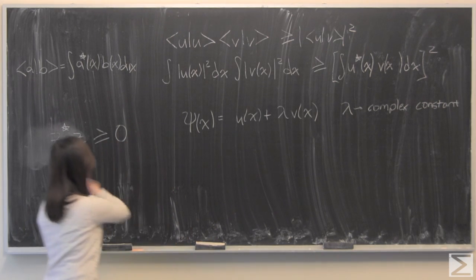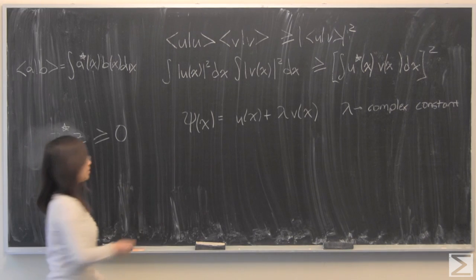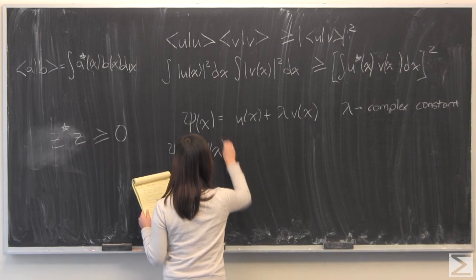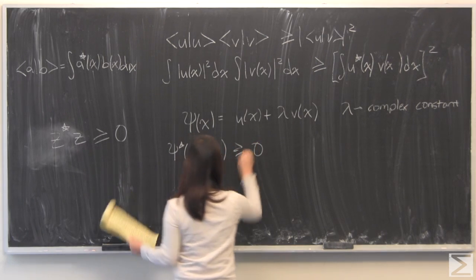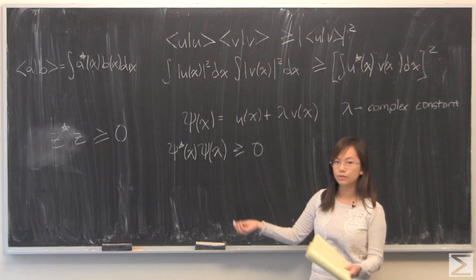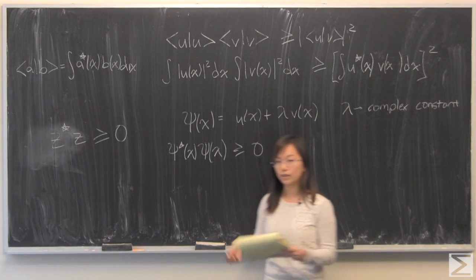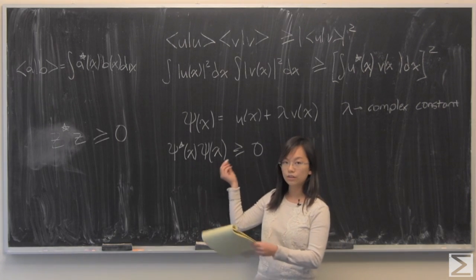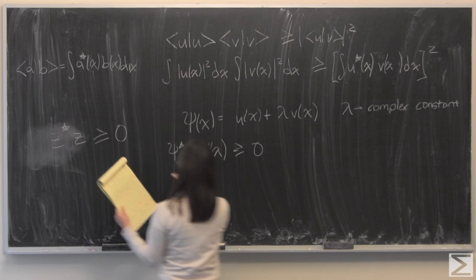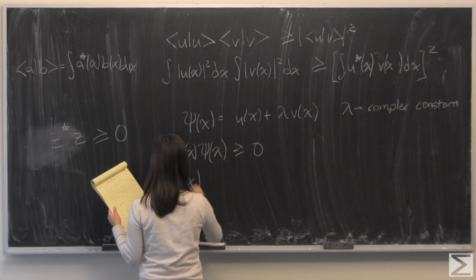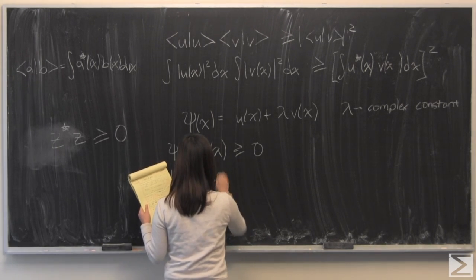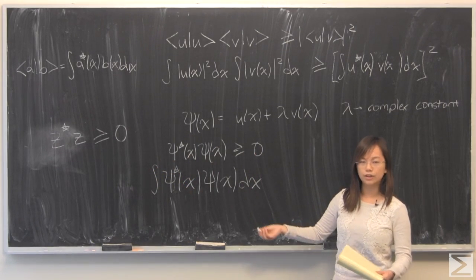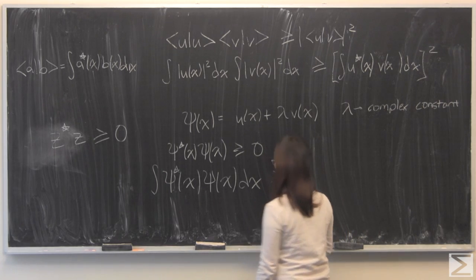And now I'm going to use what I just said over here to now make the claim that ψ star of X times ψ of X is going to be greater than or equal to zero. For the same reason as that, just because absolute value of something, absolute value always greater than zero. So from here, I'm going to now make the statement that if this function is greater or equal to zero, then if I take the integral ψ of X, ψ star of X, ψ of X, then this area under the curve, a curve that's always greater than or equal to zero, this should always be greater than or equal to zero as well.